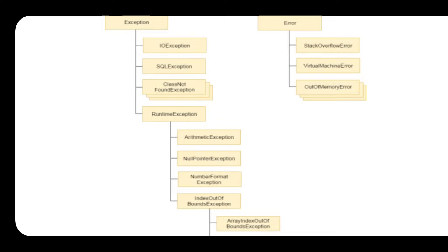Under Exception, we have IOException for input/output problems, SQLException for database connection issues (such as connection problems, class definition problems, or table problems), and ClassNotFoundException, which occurs when the class name does not match the file name — the class name and file name must be the same to execute safely.